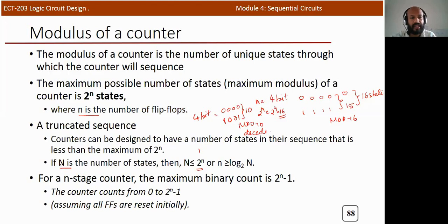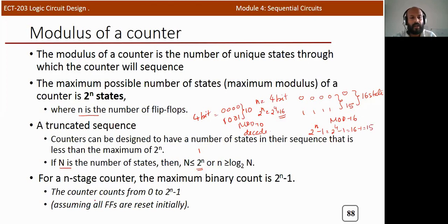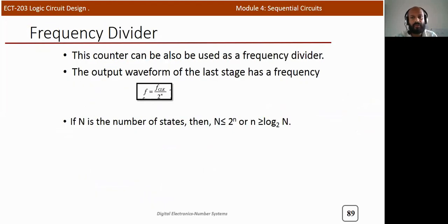The number of states is always less than or equal to 2^n. For an n-stage counter, the maximum binary count is 2^n − 1. For n = 4, the maximum count value is 2^4 − 1 = 15. To achieve maximum count from 0 to 2^n − 1, all flip-flops must be in the reset condition initially.